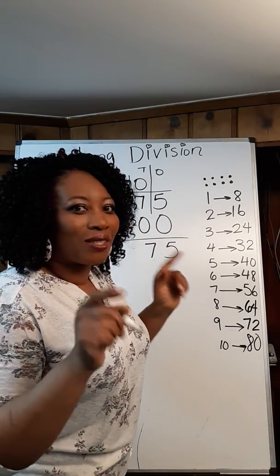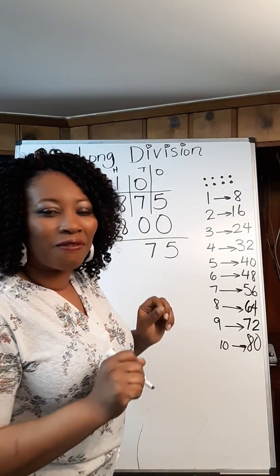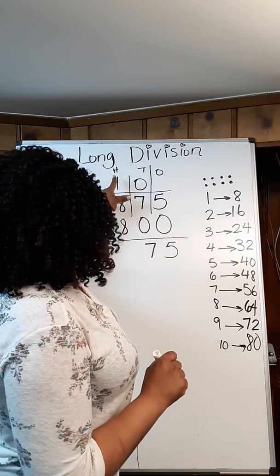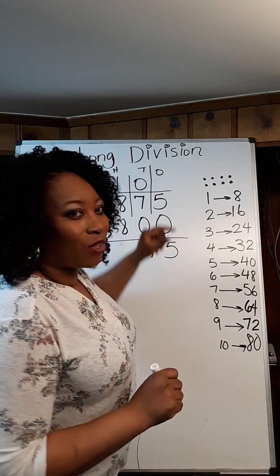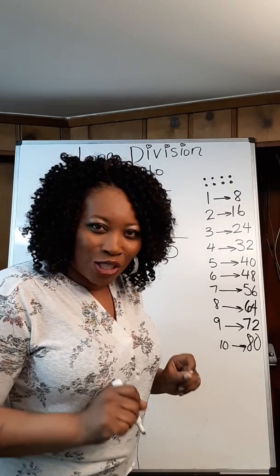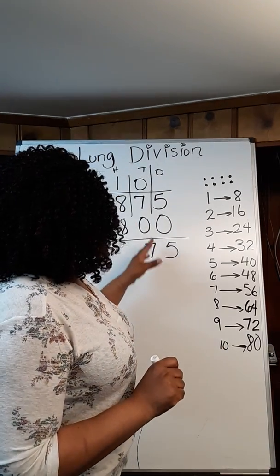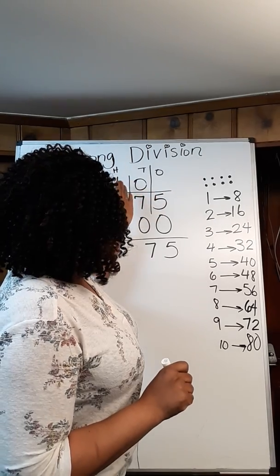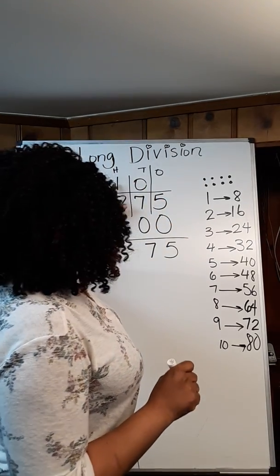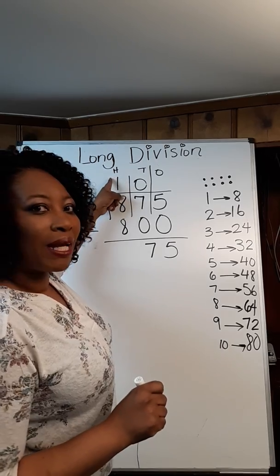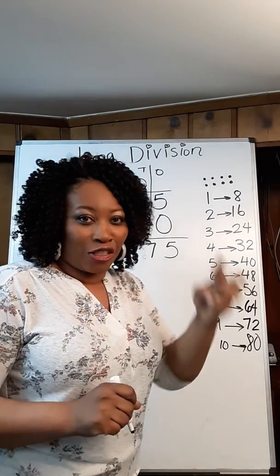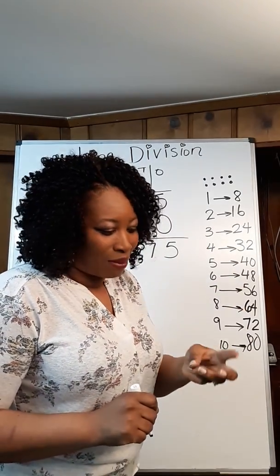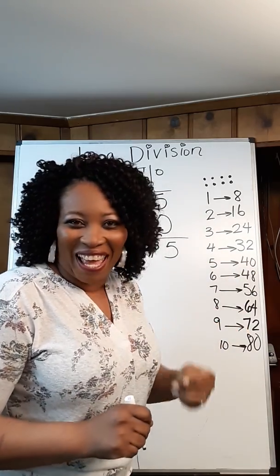This is the reason why I'm telling you it's very important that you place the place value. Do you know how many students would not put the zero there? They would just go ahead and place another number. But the fact that I have a one in the hundreds place tells me that I need three digits in my answer.